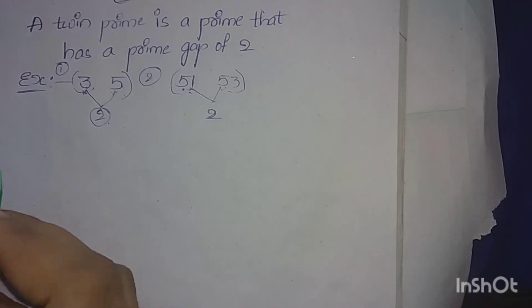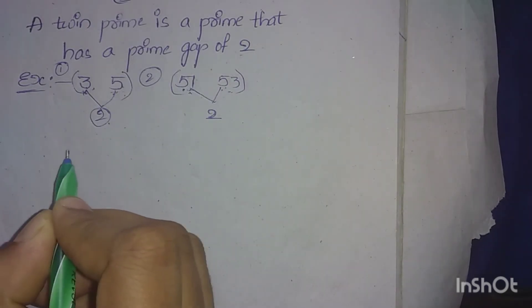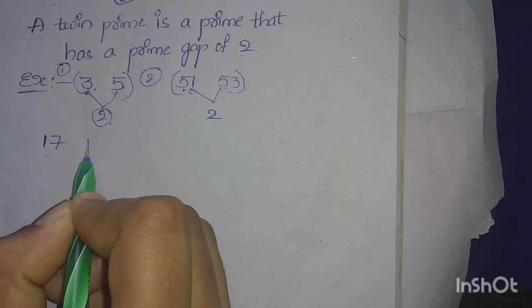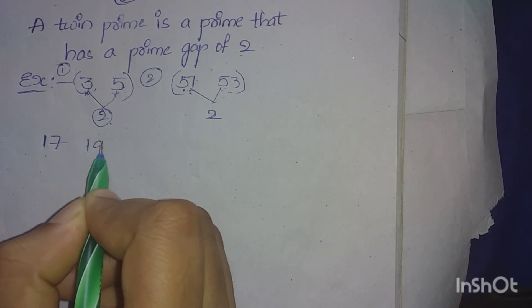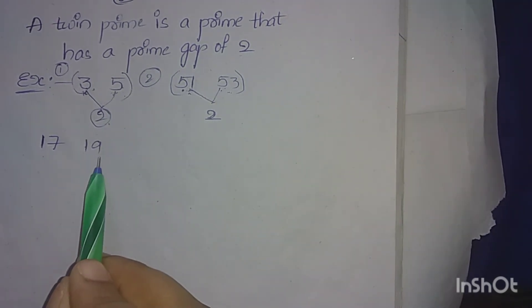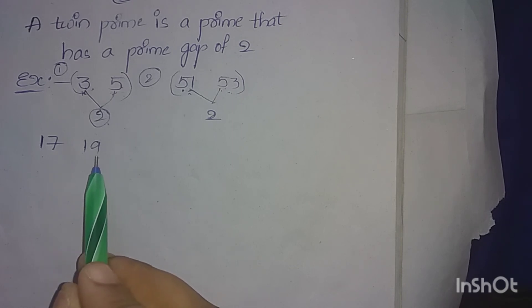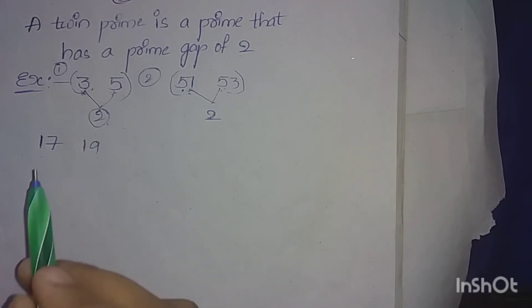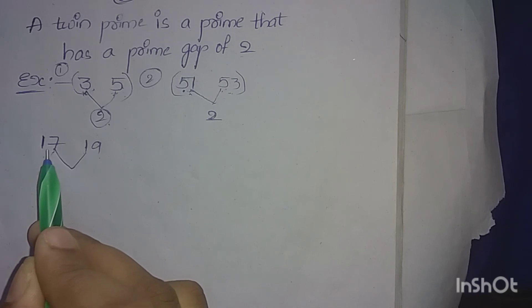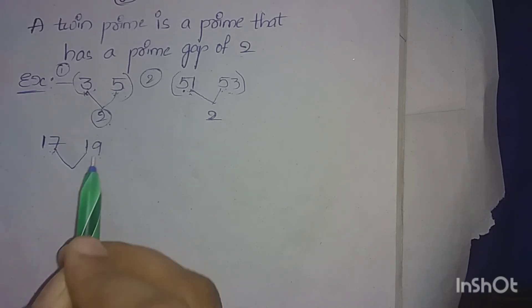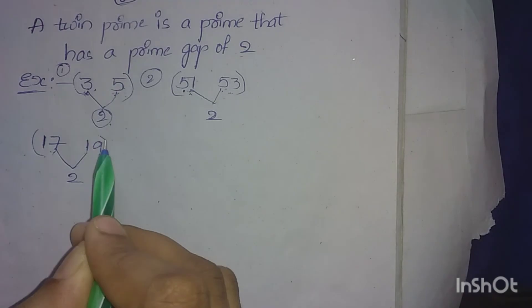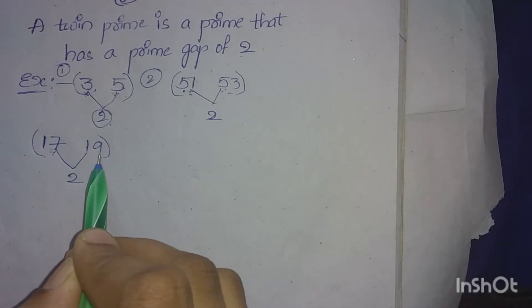The next example is 17 and 19. 17 is prime, and 19 is also prime. 17 and 19 are twin prime numbers.